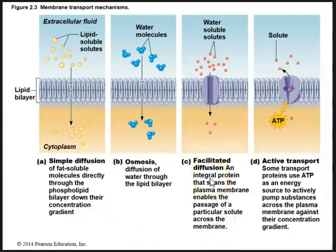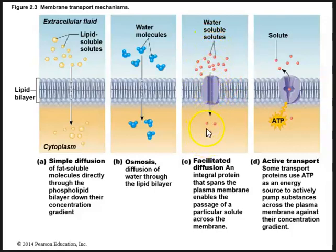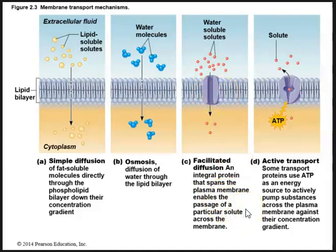Next is facilitated diffusion — a type of membrane transport where molecules move down their concentration gradient but using an integral protein. Integral proteins are embedded within the phospholipid bilayer. Facilitated diffusion is basically diffusion from high to low concentration with the help of an integral protein. 'Facilitated' essentially means it requires help — help from an integral protein that spans the plasma membrane and assists with passage of particular solutes.